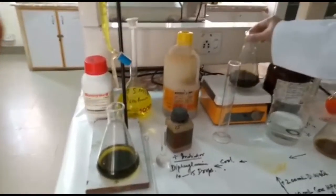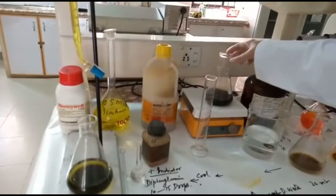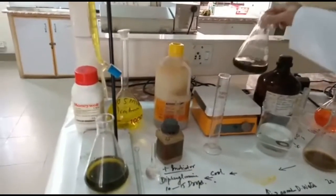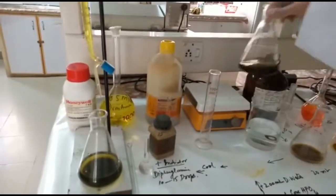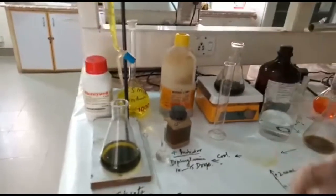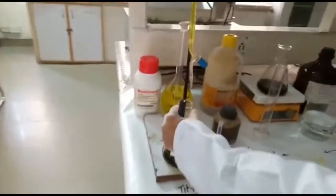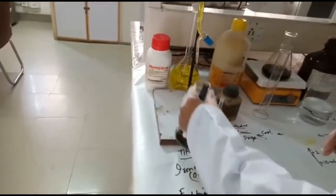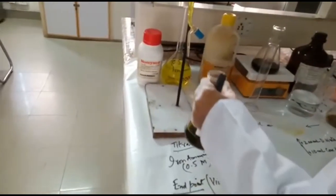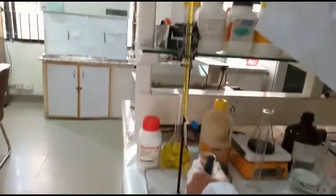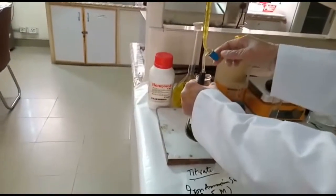After this, we will put it on the stirrer, add a magnetic stirrer, and stir the solution so that it should be in a well-mixed state. After this, we will titrate it with 0.5 molar ferrous ammonium sulfate, which we have already added in this buret.